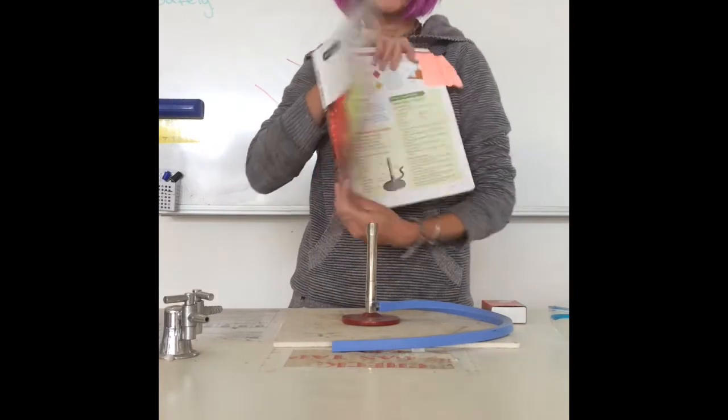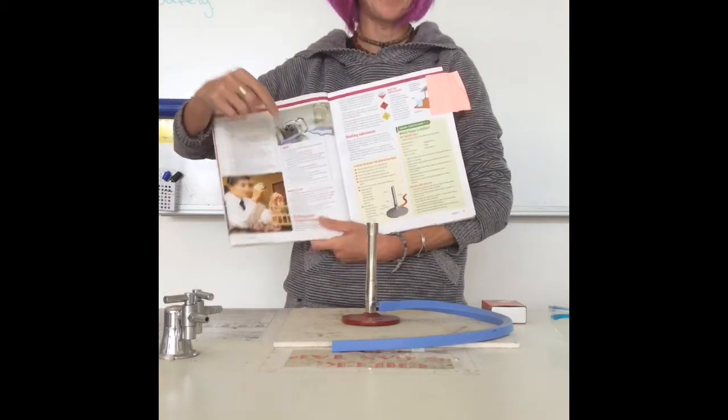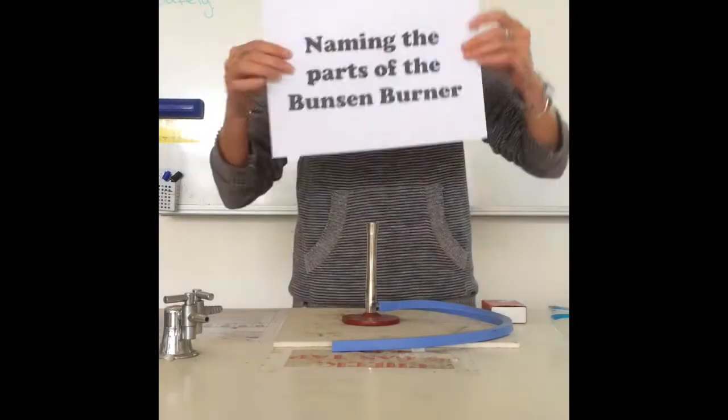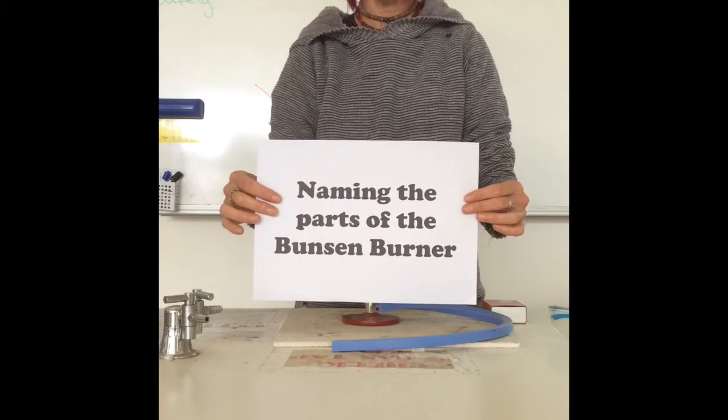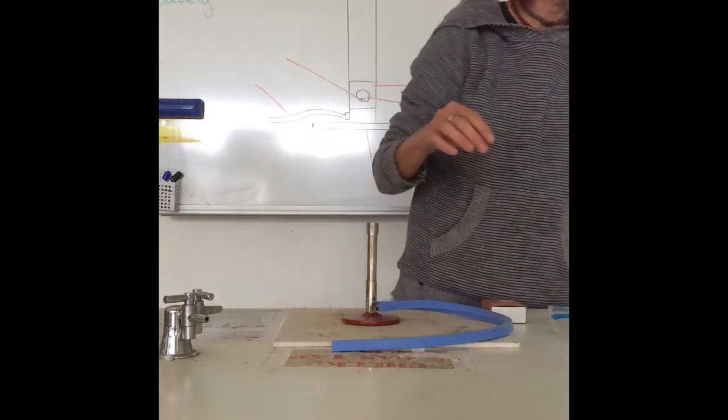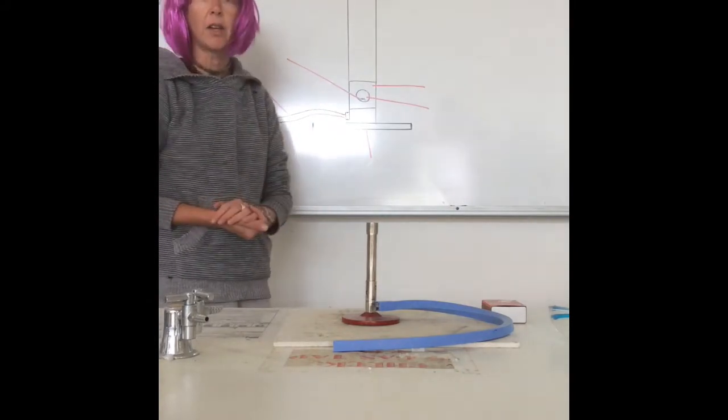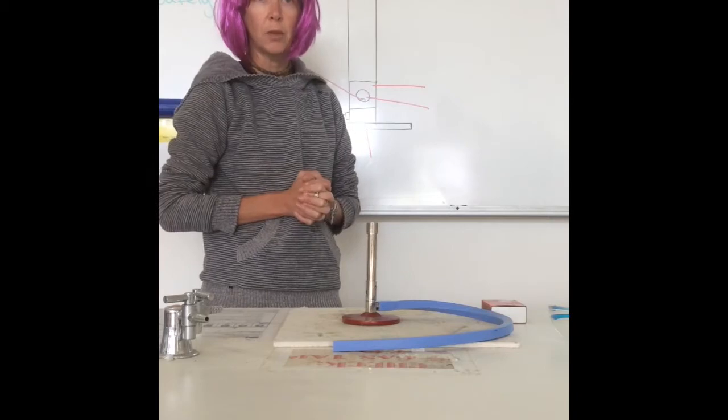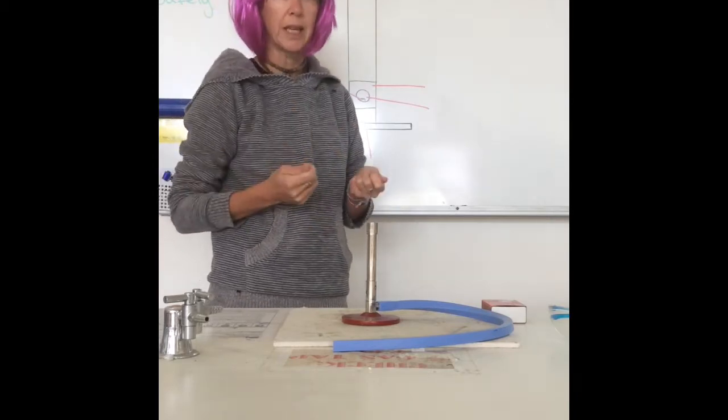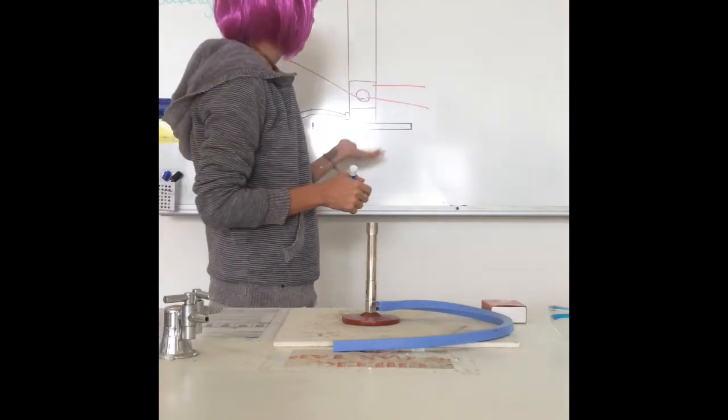Within your textbook on page 9, you will find some handy notes on the Bunsen burner. The first part of this video lesson is to name the parts of the Bunsen burner. I have a Bunsen burner here. I've also drawn one on the board for you.